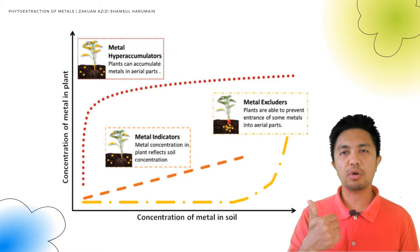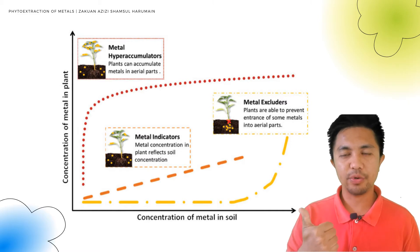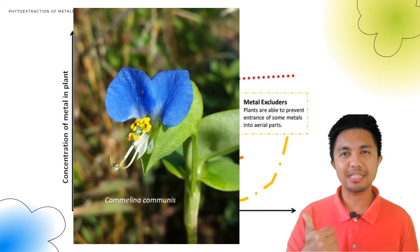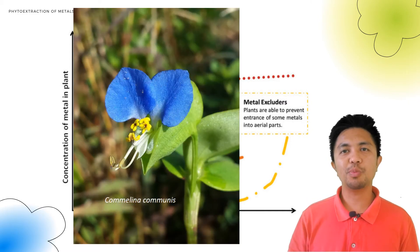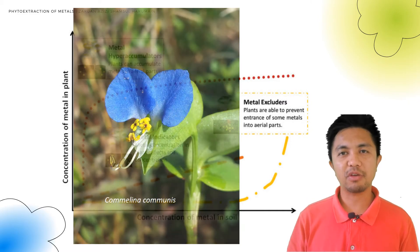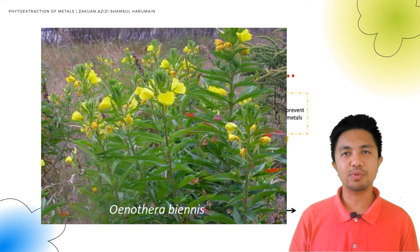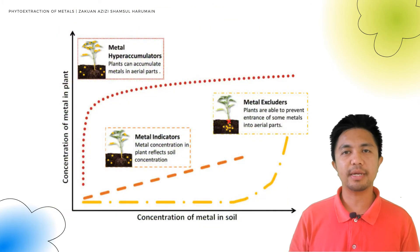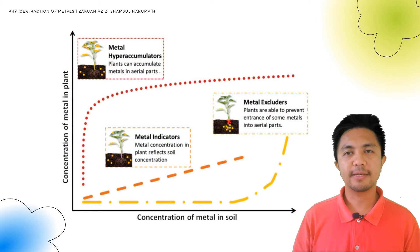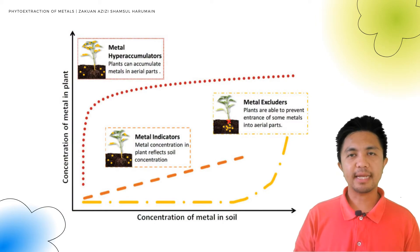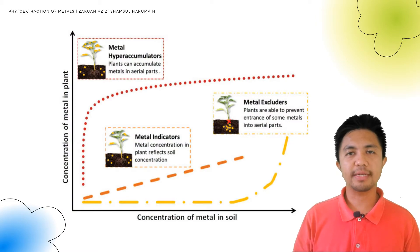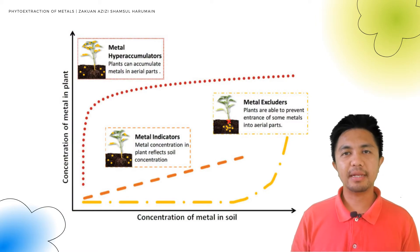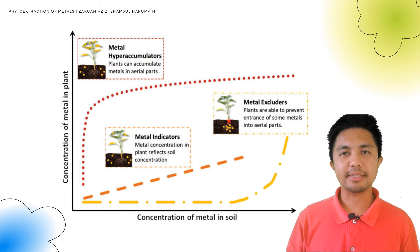The first group is called the metal excluders, whereby these plants are able to accumulate high amounts of metals in the roots but will avoid transporting the metals to the aerial tissues. The second group is called the metal indicator plants.